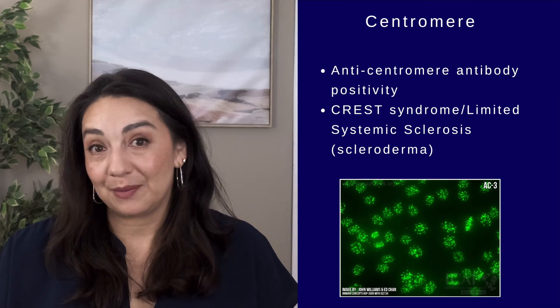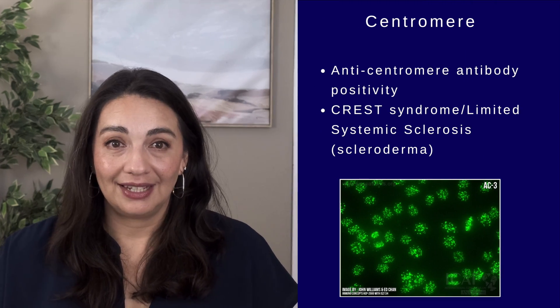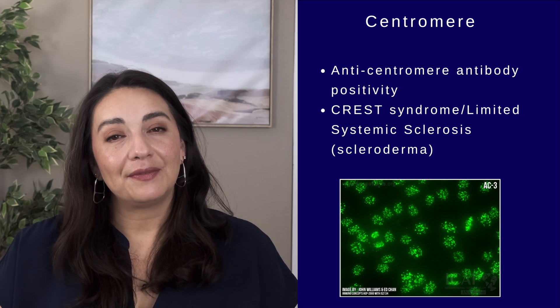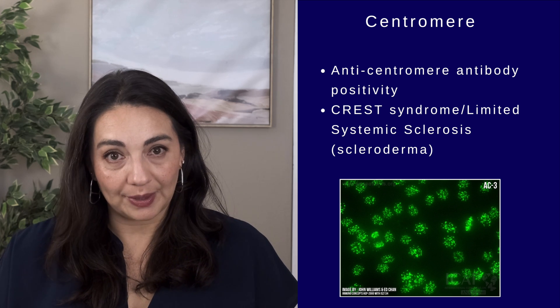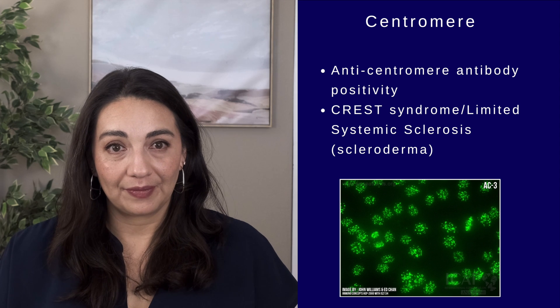The next pattern is centromere. This staining pattern is strongly correlated with the presence of an anti-centromere antibody, which is a whole different antibody test in and of itself. It's associated with the development of a condition called limited scleroderma, or CREST syndrome. CREST syndrome is very different from lupus and will put someone on a different diagnostic path. If you have questions on this, there is a whole other video on that — the link will be in the description box.